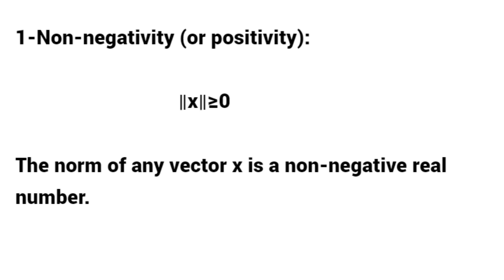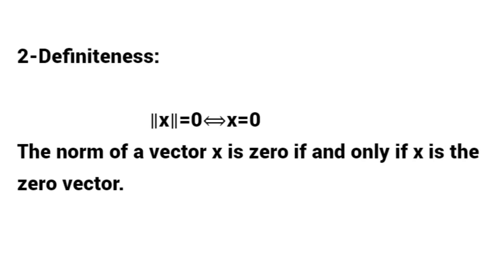One: non-negativity or positivity. The norm of x is greater than or equal to zero; the norm of any vector x is a non-negative real number. Two: definiteness. The norm of a vector x is zero if and only if x is the zero vector.